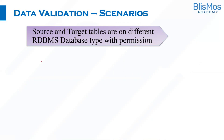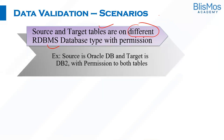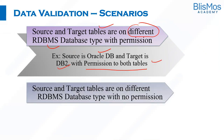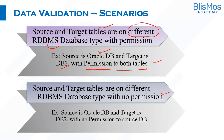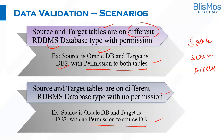The next scenario is where source and target tables are on different RDBMS types — unlike the earlier scenario where both were the same RDBMS. For example, the source is Oracle DB and the target is DB2, and the testing team has permission to both. The final scenario is the same as the previous one except the testing team does not have permission to the source DB. We've now covered different validation scenarios based on source type, server location, and access permissions.